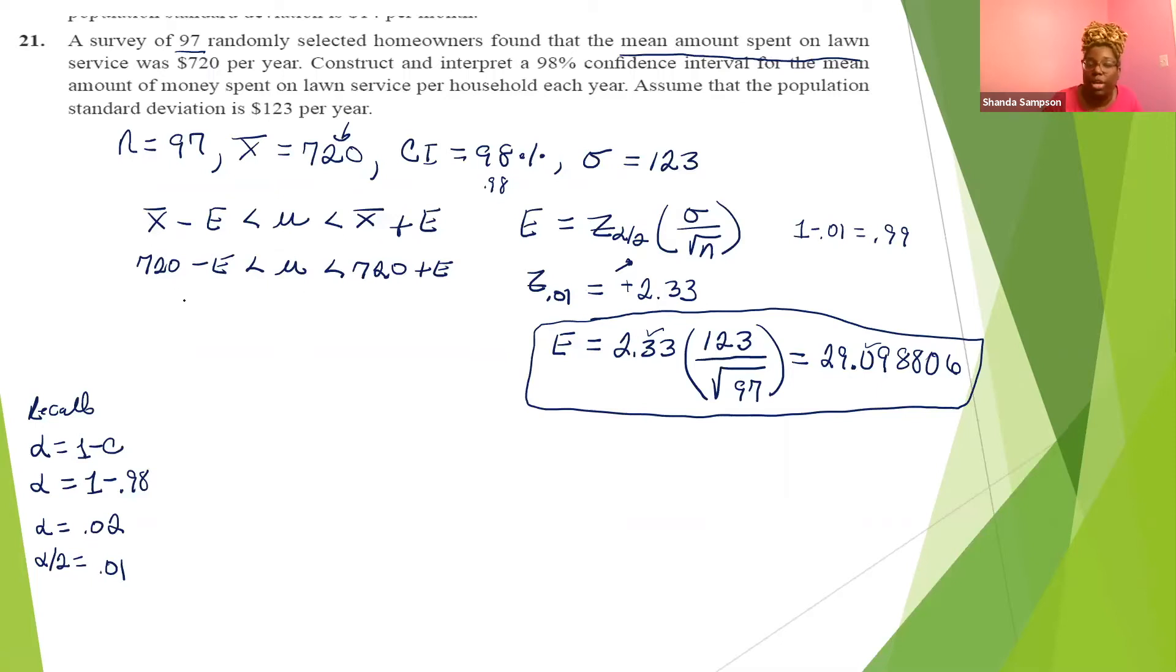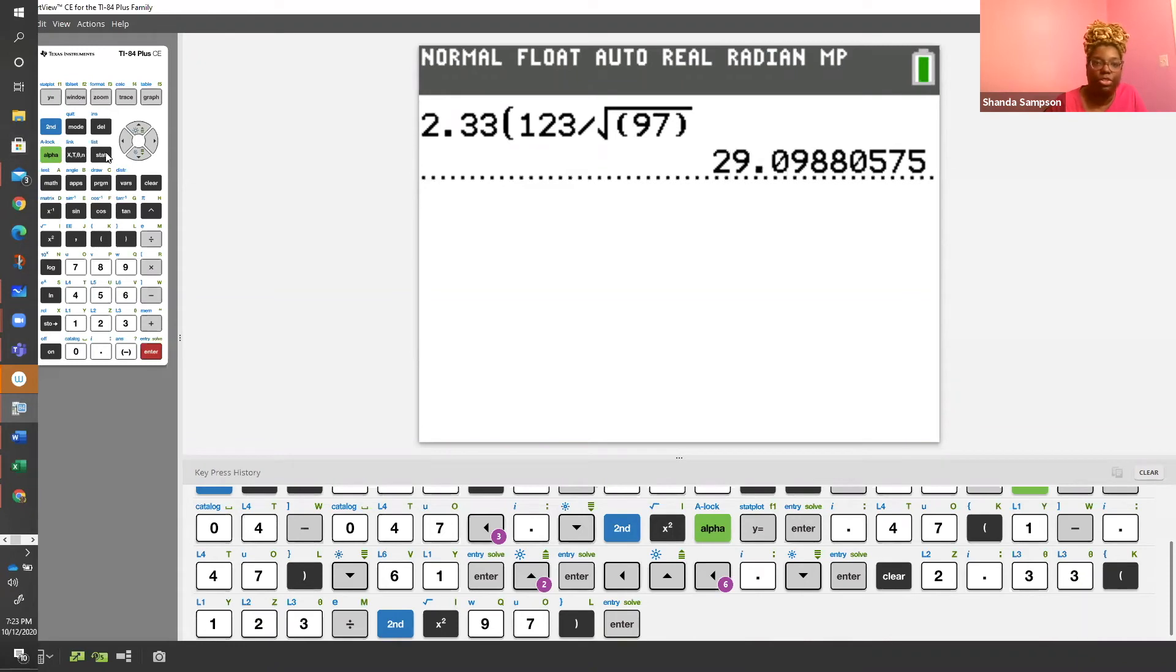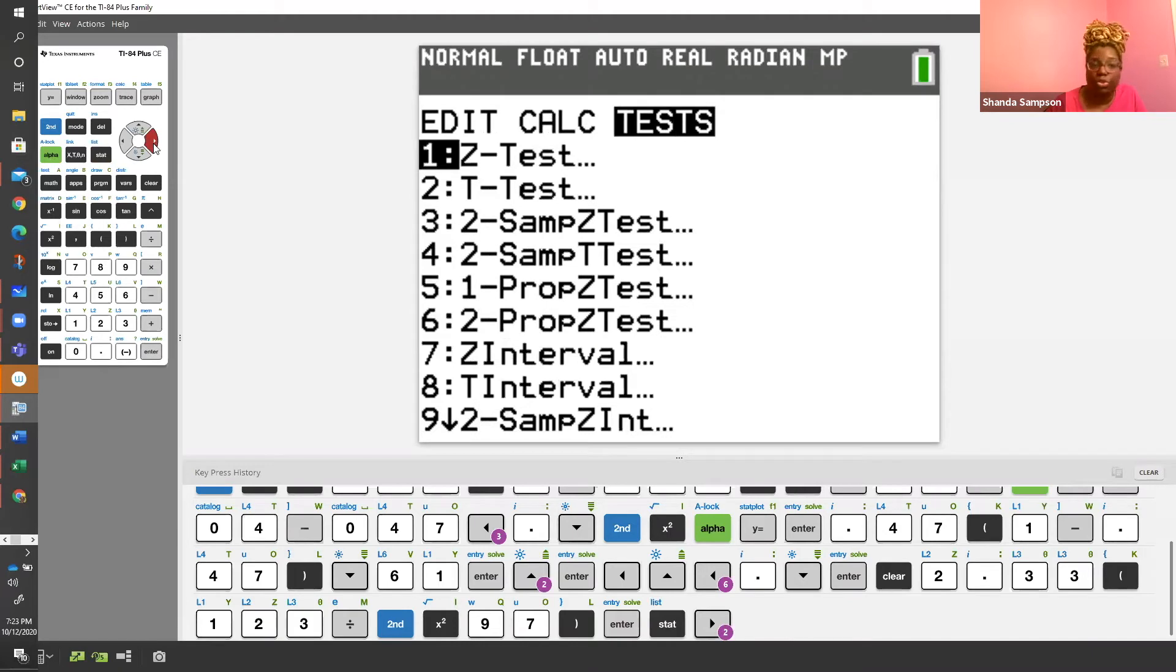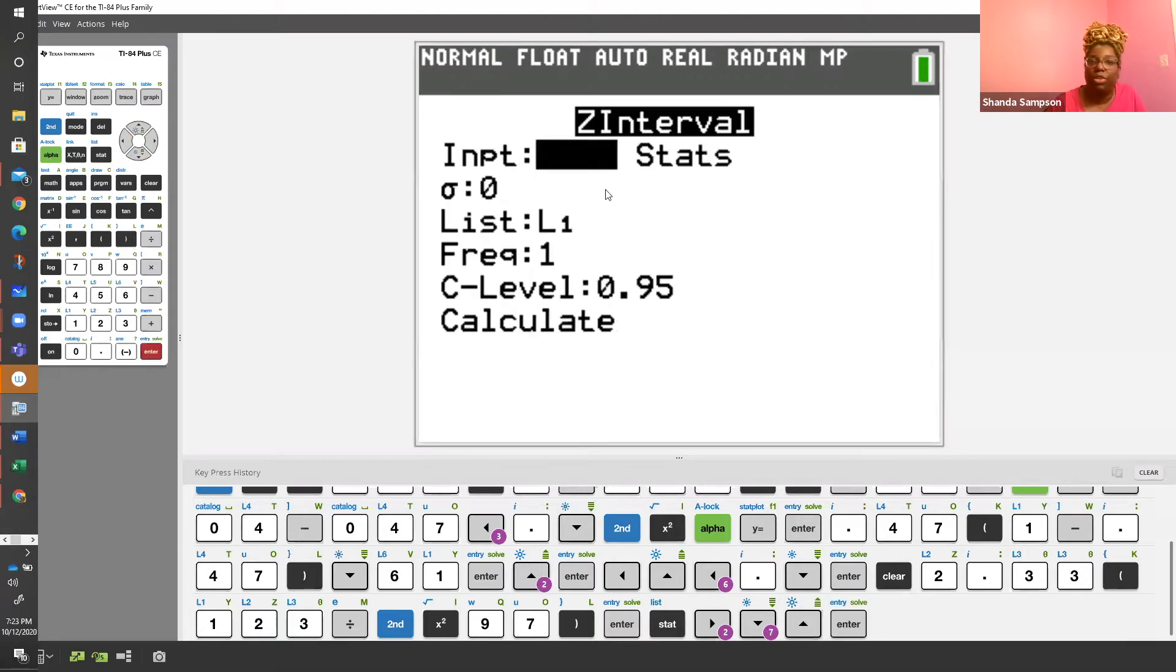So now at this point, you're going to get your answer using the calculator. After you show me that you know how to calculate E appropriately to get your interval, we can use calculator shortcut. For the calculator shortcut for this, you're going to go into stat, you're going to go over to test, and this is a Z interval test. Remember we use a Z chart with a Z score and we're getting a Z interval. So that's number seven. Either hit number seven or scroll down to number seven.